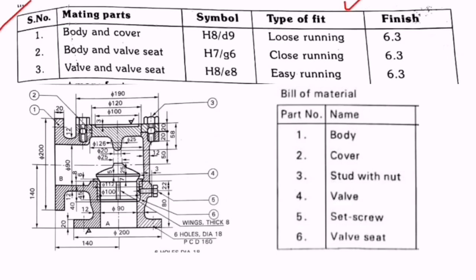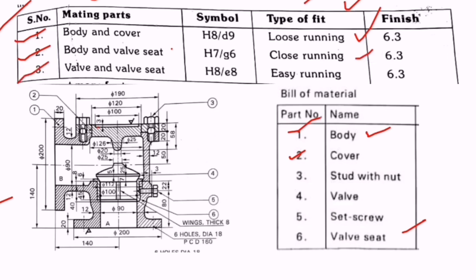The next table is the mating parts or type of fit table. It shows what mating parts exist in the non-return wall and what type of fit applies. Body and cover are mating parts — their fit type is loose running fit. Body and valve seat are mating parts — their fit type is close running. Valve and valve seat (fourth and sixth parts) are mating parts — their fit type is easy running.